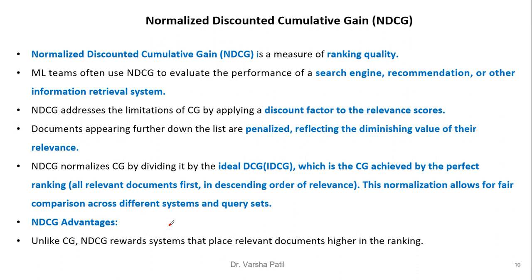Normalized Discounted Cumulative Gain (NDCG) is a measure of ranking quality. ML teams often use NDCG to evaluate the performance of a search engine, recommendation system, or any other information retrieval system. It addresses the limitation of CG by applying a discount factor to the relevance score — documents appearing further down the list are penalized, reflecting the diminishing value of their relevance. It normalizes CG by dividing by the ideal DCG (the CG achieved by a perfect ranking), allowing fair comparison across different systems and query sets. NDCG rewards systems that place relevant documents higher in the ranking.